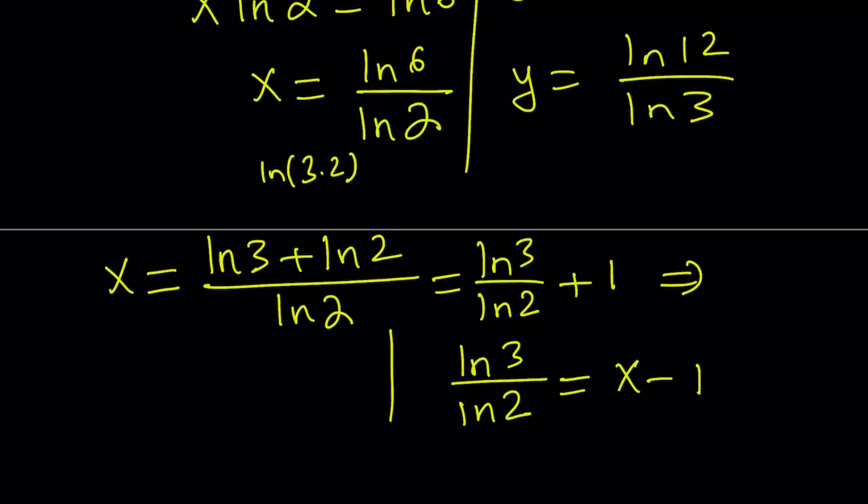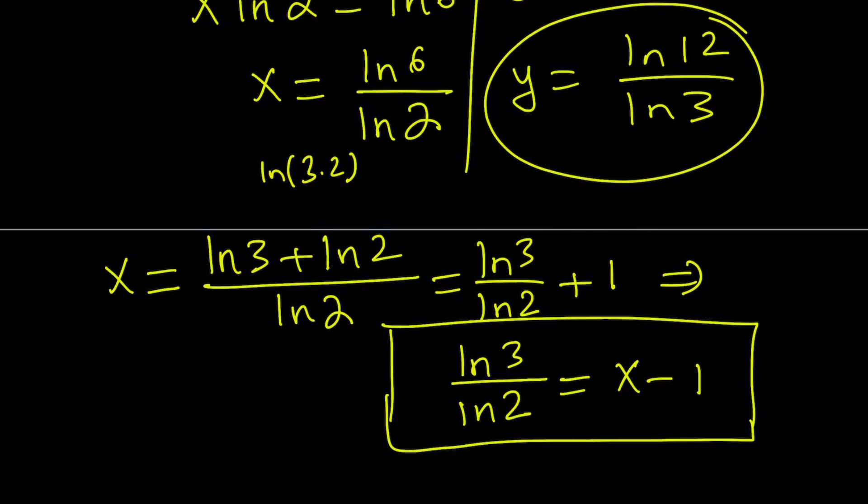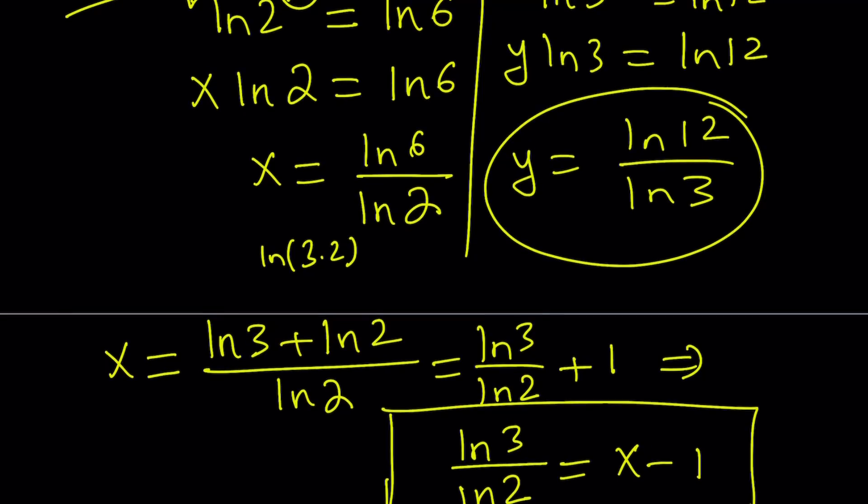And from here, what I can do is I can isolate ln(3)/ln(2) and write it as x - 1. Now, it is important to be able to express a logarithmic expression in terms of x because we do need to substitute that into y so we can find y in terms of x. But first, let's go ahead and work on this expression a little bit so we can make it look like x - 1.